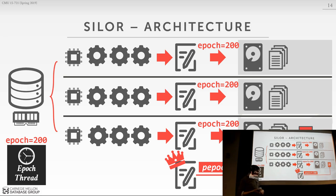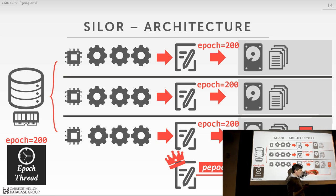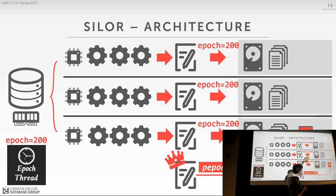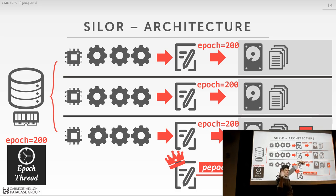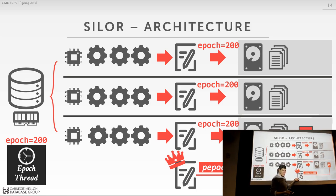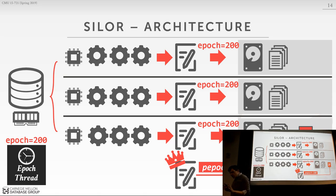After thinking about it, I actually don't think the persistent epoch file is strictly required — it's a nice-to-have. Without it, when you boot the system up you'd just go find the highest epoch that all your logger threads actually wrote to. You still need to know that everyone has written up to that epoch before telling the outside world a transaction has committed, but you could figure that out by looking at the log files. The persistent epoch just makes restart easier — less work to do on boot.